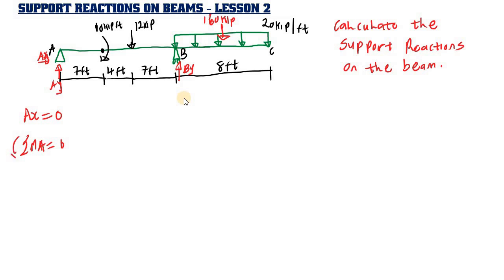We are going to say clockwise movement is positive and counterclockwise is negative. Ax and Ay pass through point A, so they produce no moment there. We have a moment of 10 kip-ft acting clockwise, so that is negative 10 kip-ft. The 12 kip force acts downward, rotating the beam clockwise, so it is negative 12 kip multiplied by a distance of 7 plus 4 equals 11 feet.